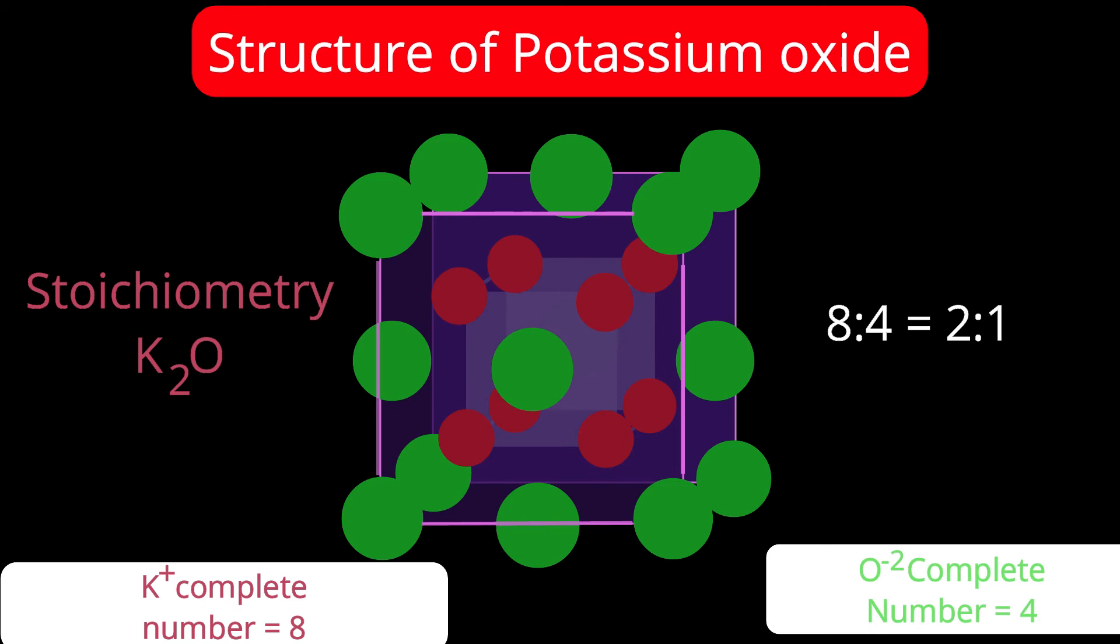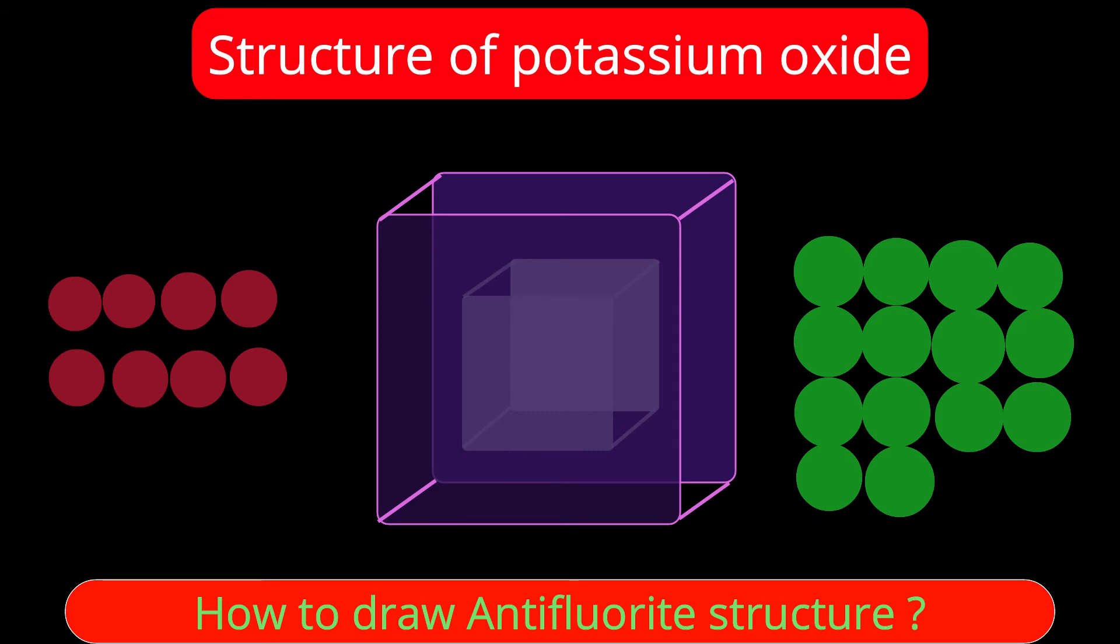Now how to draw the structure? The calcium fluoride structure that I discussed in a similar way. Only thing, previously metal ions were in outer cube in FCC kind of arrangement. Now metal ions will be at the corner of the inner cube and oxides will be in outer cube in FCC arrangement. Let us understand how to draw this antifluoride structure.